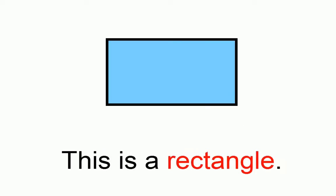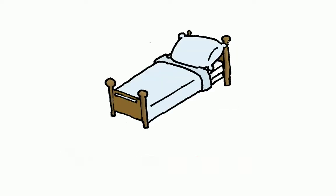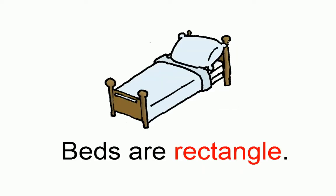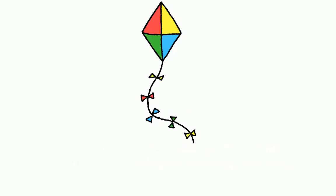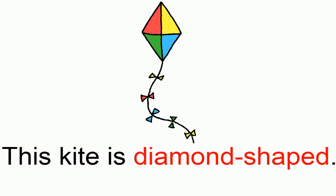This is a rectangle. Beds are rectangle. This is a diamond. This kite is diamond-shaped.